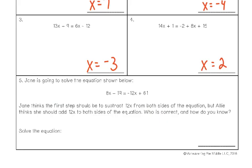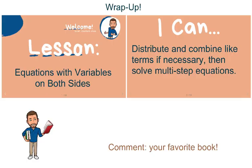That's all we're going to go through together today. If you're looking at number 5 as a challenge problem, Allie is correct — but I'm not going to explain why; we can talk about that in class. Today we went over equations with variables on both sides. Now you should be able to distribute and combine like terms if necessary and then solve multi-step equations following the steps in your notes. Go ahead and go back to the calendar and complete any other assignments you have left for the day. Let me know if you have any questions.